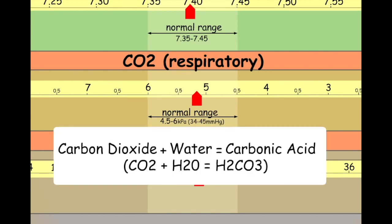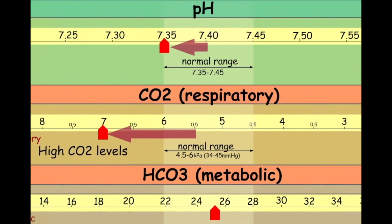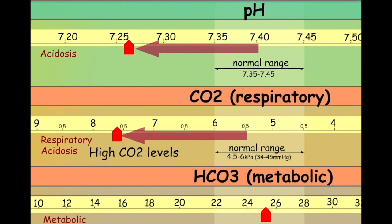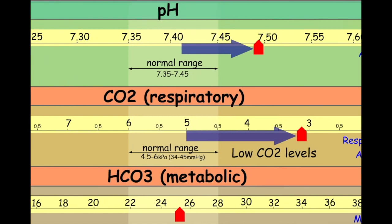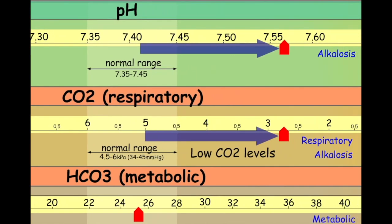When CO2 combines with water we get carbonic acid. Therefore, high levels of CO2 in our blood are going to drive our pH in an acidotic direction, and low levels of CO2 are going to drive our blood in an alkalotic direction.